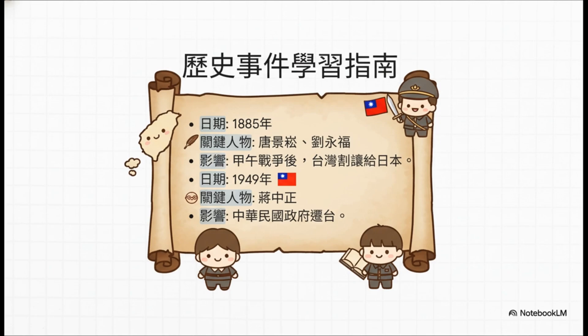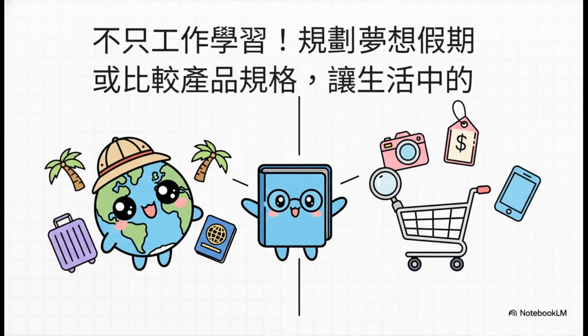就像画面上的历史事件学习笔记一样，它能自动帮你按照时间轴、关键人物，还有历史影响，把所有的知识点整理得井井有条。这已经不只是笔记了，它更像是一张知识地图，可以让你用最高效的方式在脑中建立起非常清晰的脉络。